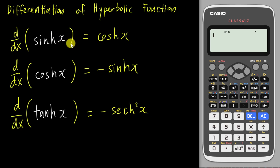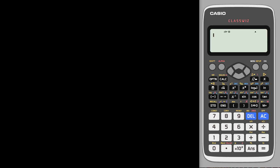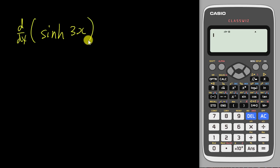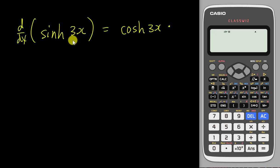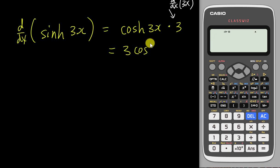But what if the angle is no longer x? For example, when we differentiate hyperbolic sine 3x, we get hyperbolic cosine — the angle remains the same, which is 3x — and then we differentiate the angle one more time. Differentiating 3x gives us 3, so the shortcut result is 3 hyperbolic cosine 3x.